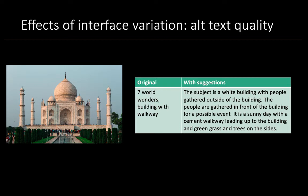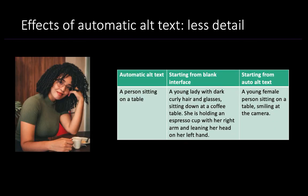Interestingly, we also found that the presence of automatic alt text affected the final quality of alt text after user edits. Here I have a photo of a person sitting drinking coffee. When starting from a blank interface, a participant wrote: 'A young lady with dark curly hair and glasses sitting down at a coffee table. She's holding an espresso cup with her right arm and leaning her head on her left hand.' When the participant started from the automatic alt text — which was 'a person sitting on a table' — the resulting alt text was 'a young female person sitting on a table smiling at the camera,' which is more concise but also inaccurate, as the person is sitting at the table, not on the table.